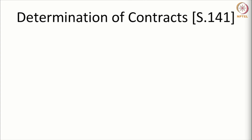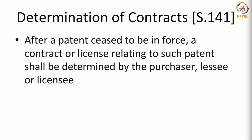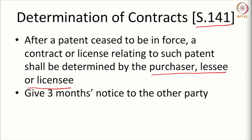There is also a provision for determination — that is, termination — of certain contracts. After a patent has ceased to be enforced, a contract or license relating to such patent shall be determined by the purchaser, lessee, or licensee. Normally a patent runs only up to its 20-year term, so if there is a contract that extends beyond the term of the patent, it can be revoked or determined by the purchaser, lessee, or licensee. Section 141 provides for this, and the party who seeks to determine the contract shall give 3 months' notice to the other party.